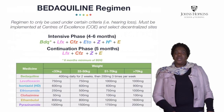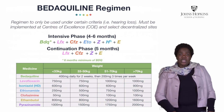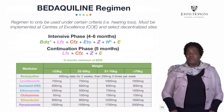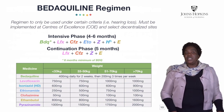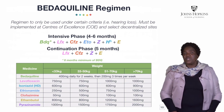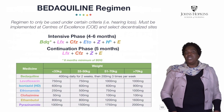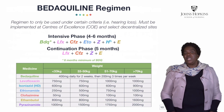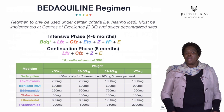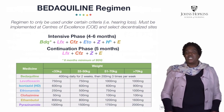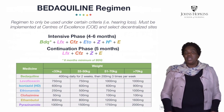Here is the bedaquiline regimen. The intensive phase includes bedaquiline and levofloxacin. If the patient is going to be on bedaquiline, you do not start the patient on moxifloxacin; instead you use levofloxacin. So it will be bedaquiline, levofloxacin, clofazimine, ethionamide, pyrazinamide, high-dose INH, and ethambutol. In the continuation phase: levofloxacin, clofazimine, pyrazinamide, and ethambutol.